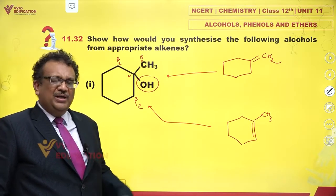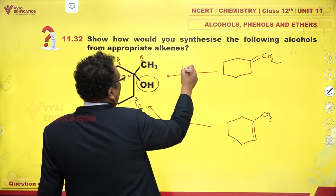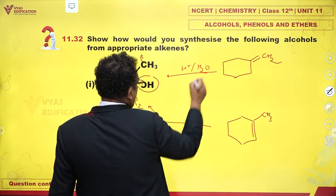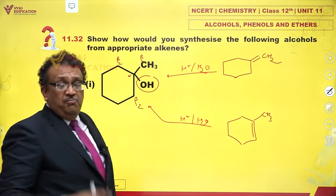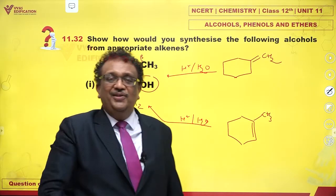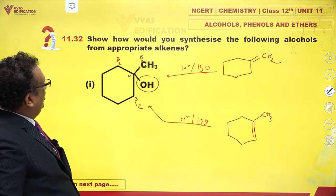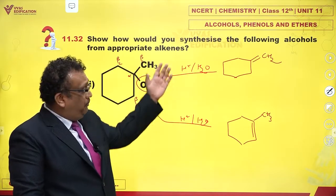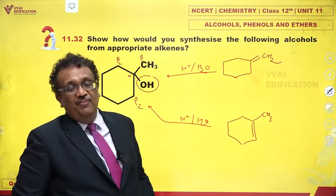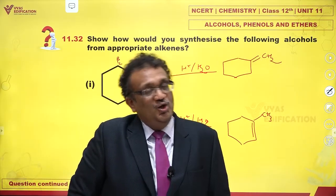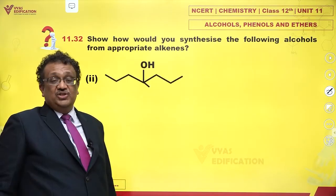These appear to be two possible alkenes from which I would be able to obtain this alcohol. In which way? By simple hydration — H⁺, H₂O. Both are the correct answers. How would you synthesize the following alcohols from appropriate alkenes? There are two possible appropriate alkenes, and from any of them, if you add acid and water, you would get the desired alcohol.